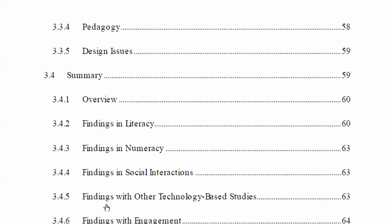There is also a summary of each section because it's a very comprehensive review and people can get lost. The summary section allows the reader to reset his or her bearings and look at the specific areas: literacy, numeracy, social interactions, other technology-based studies, and findings with engagement. So that's a concrete example of how a review of the literature could be organized.